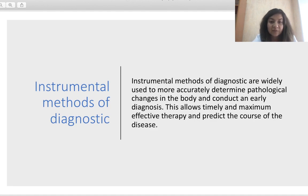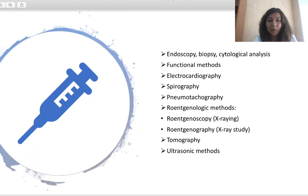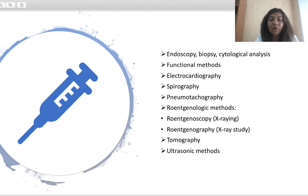Instrumental methods of diagnostics are widely used for more accurately determining pathological changes in the body and conducting early diagnosis, allowing timely and maximally effective therapy and prediction of disease course. Types of instrumental studies used in internal medicine include: endoscopy, biopsy with cytological analysis, functional methods such as electrocardiography, spirography, and pneumotachography, radiological methods including fluoroscopy and radiography (X-ray study), tomography, and ultrasonic methods. All of these will be discussed when we cover different organs, systems, and syndromes.